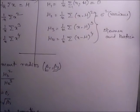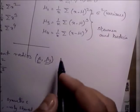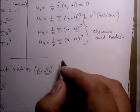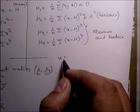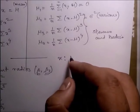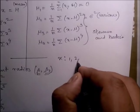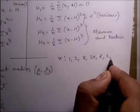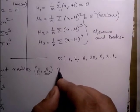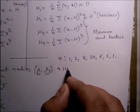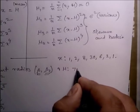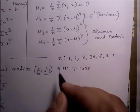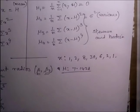We will see an example. Suppose the data is: 1, 2, 8, 30, 6, 2, 1. We have to calculate the mean first. The mean is 7.1428.